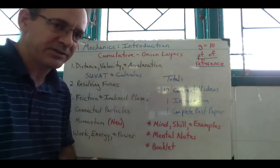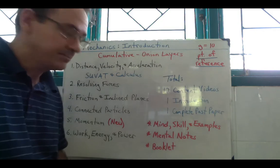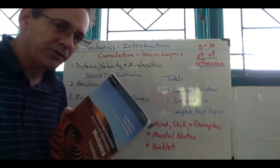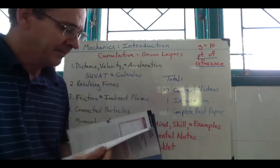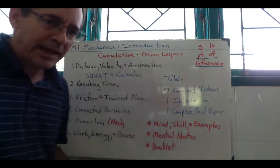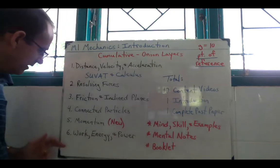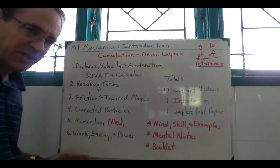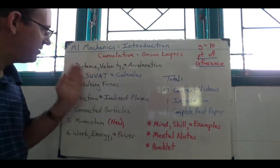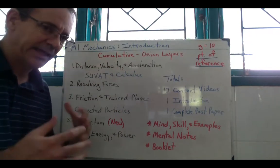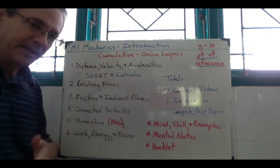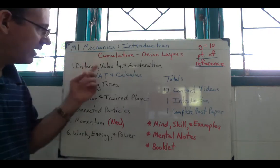It builds in a cumulative manner, so it's more like onion layers and you keep adding another layer onto the information previously taught. The newer mechanics book has nine chapters. I still break down my teaching into six units.